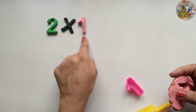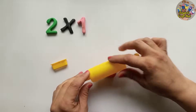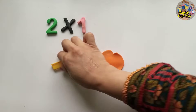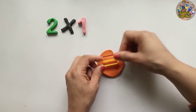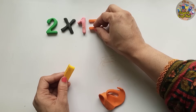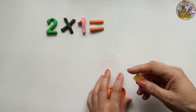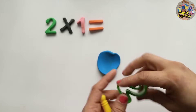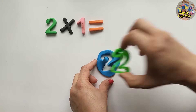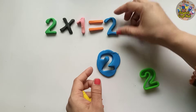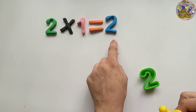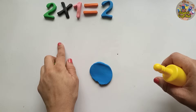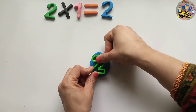Let's solve this table. Two multiplied by one — do you know what the answer will be? Now I will also make the equal sign. When we solve this first equation, we always put this equals sign. Do you know what the answer is if you add two one time? The answer is two! Yes, two multiplied by one is equal to two. So two ones are two.